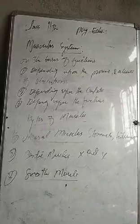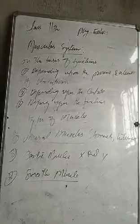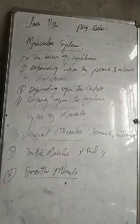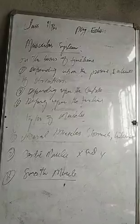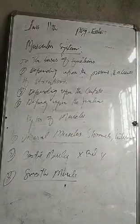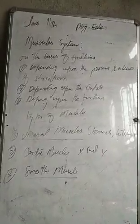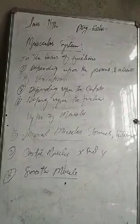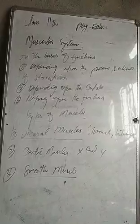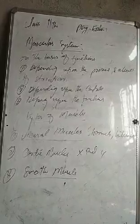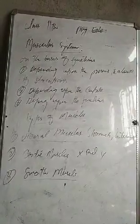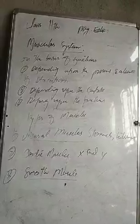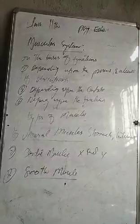Only skeletal muscles are voluntary muscles, which we can control consciously. Smooth and cardiac muscles act involuntarily. So skeletal muscles — or coordinator muscles — are called voluntary muscles, and smooth and cardiac muscles are involuntary.